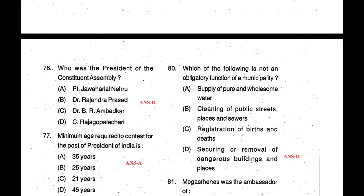Question 76: Who was the president of the Constituent Assembly? The Constituent Assembly started in 1946 and was completed on 26 November 1949. The president of the Constituent Assembly was Rajendra Prasad. If the question asks who is the father of the Indian Constitution or the chairman of the Drafting Committee, the answer is Dr. B.R. Ambedkar. But here it is the president of the Constituent Assembly, so correct answer is B — Rajendra Prasad.